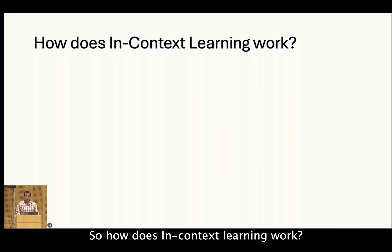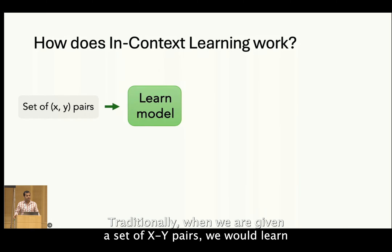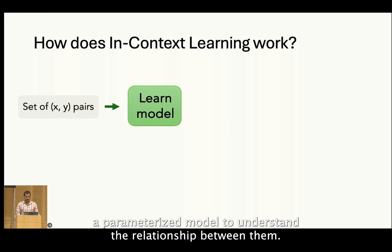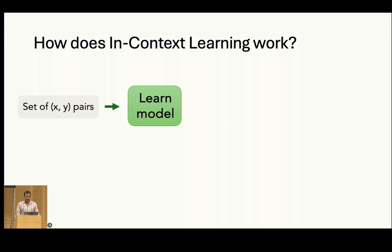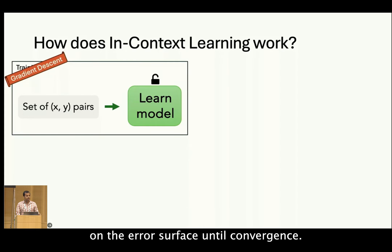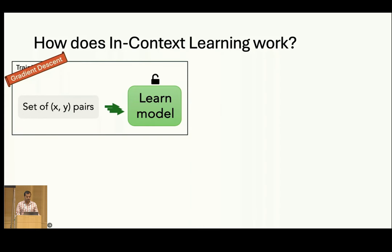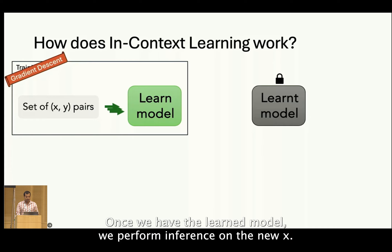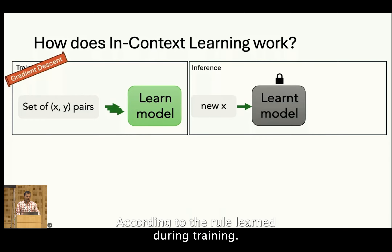So how does in-context learning work? Traditionally, when we are given a set of X-Y pairs, we would learn a parameterized model to understand the relationship between them. We update the parameters of this model by performing gradient descent on the error surface until convergence. Once we have the learned model, we perform inference on the new X according to the rule learned during training.